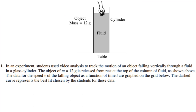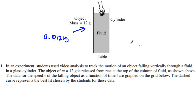You can see what's happening here in this experiment. A student is using video analysis. We have a mass of 12 grams — we always want to put that in kilograms: 0.012 kilograms — and the student is dropping it. It's going to be going down, and hopefully we're going to get close to hitting what's called terminal velocity.